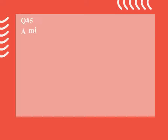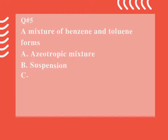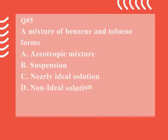Question number 5. A mixture of benzene and toluene forms: A. An azeotropic mixture. B. Suspension. C. Nearly ideal solution. D. Non-ideal solution. Correct option is C.